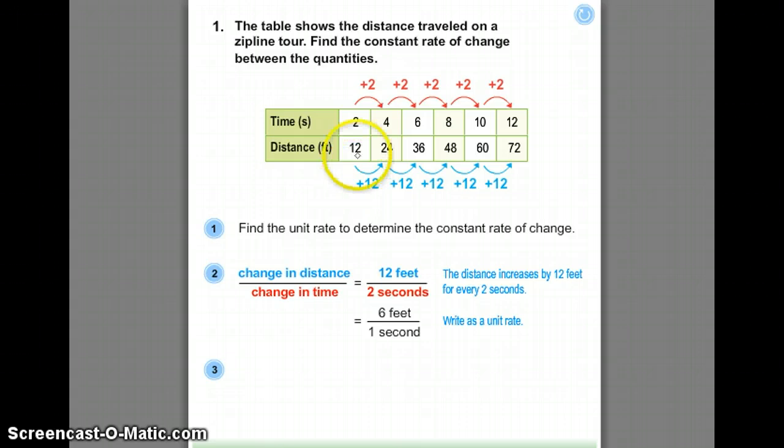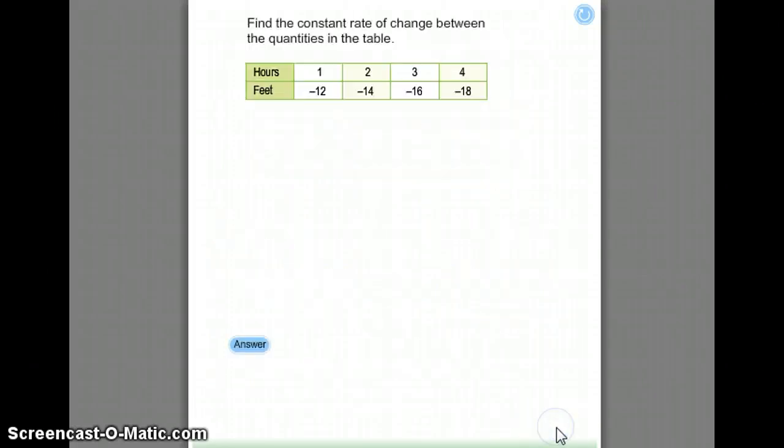The change in the distance is 12. I'm going up 12 every time, or 24 minus 12 is 12. The change in time, I'm increasing by 2 each time, 2 seconds, or 4 minus 2 is 2. And we talked about in the last unit, writing it as a unit rate means that my denominator must be 1. So my change in distance over my change in time, or my rate of change, is 6 feet per second, because we are moving 6 feet for every second. Therefore, we would say the constant rate of change is 6 feet per second.